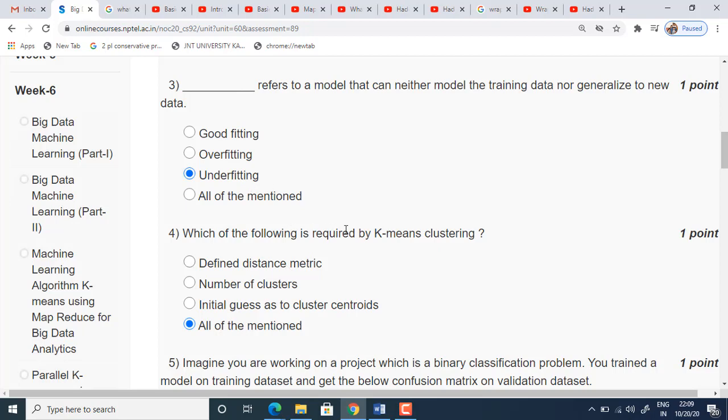Coming to fourth one, which of the following is required by k-means clustering. Whenever we solve any k-means clustering problems, we need to know three inputs priorly. The first one is distance matrix. We use either Euclidean distance or Manhattan distance, whatever, based on the dataset. The number of clusters we need to know, that is k. We need to know the k value also. I mean, given the dataset into how many groups you need to cluster it like two or three or four. That is number of clusters. The third one is initial guess to cluster centroids. We need to know the initial centroids also.